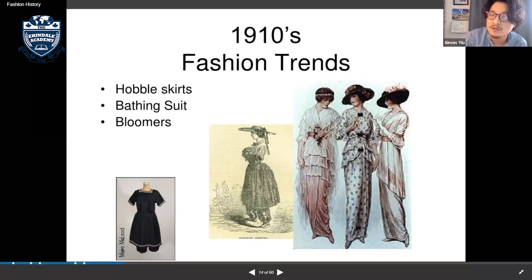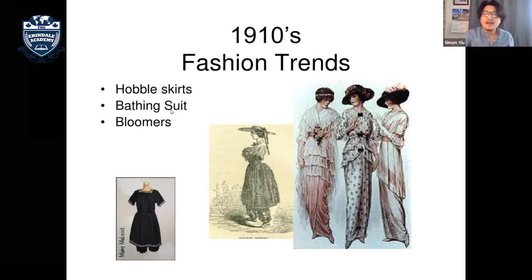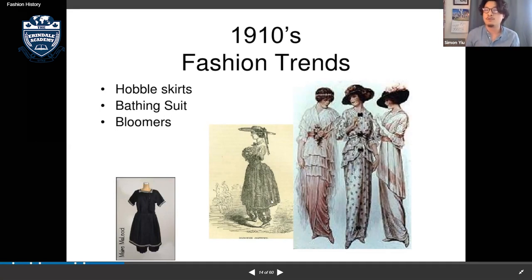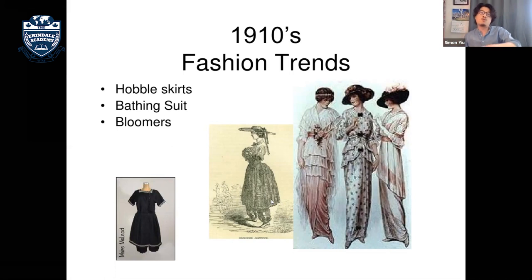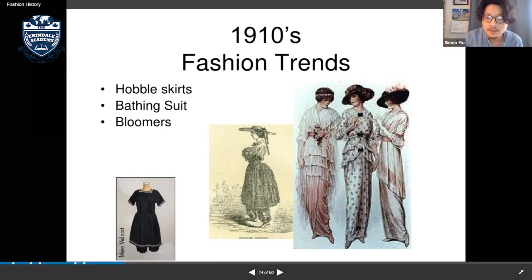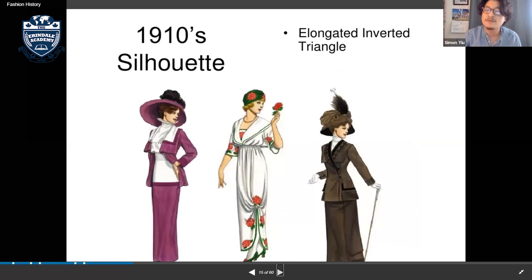The first bathing suit also appeared in the 1910s. Bloomers came in as well — they come in at the waist and flare out slightly, different from the large S-shaped silhouette of the Edwardian era. Bloomers were a smaller, more compact shape.